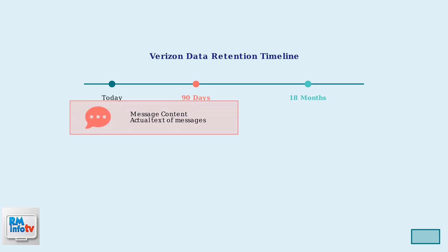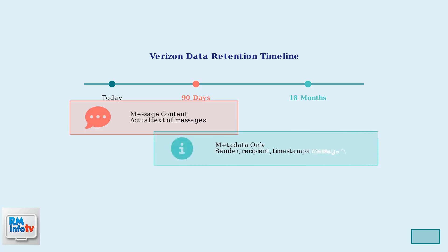For the first 90 days, Verizon retains the actual content of your text messages. This means the full text of what you sent and received is stored on their servers during this period. After 90 days, the message content is deleted, but Verizon keeps the metadata for up to 18 months.